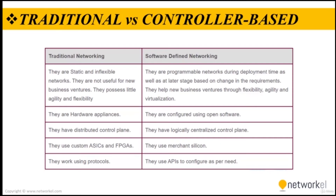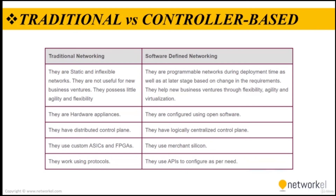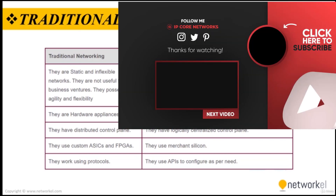Traditional networking uses custom ASICs and FPGAs, while SDN uses merchant silicon. Lastly, traditional networking uses protocols, while SDN uses APIs to configure the network as per need.